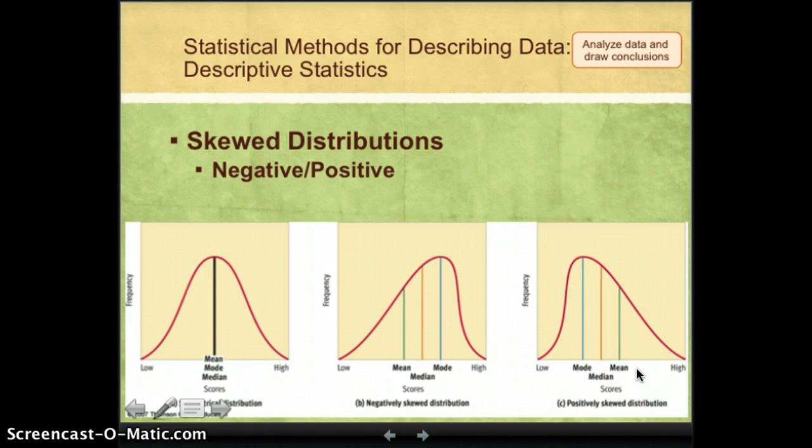We can also have a positively skewed distribution. In this case, the tail is to the high side or the positive side. So we're looking at the tail. And then the mean is higher than the mode and the median.